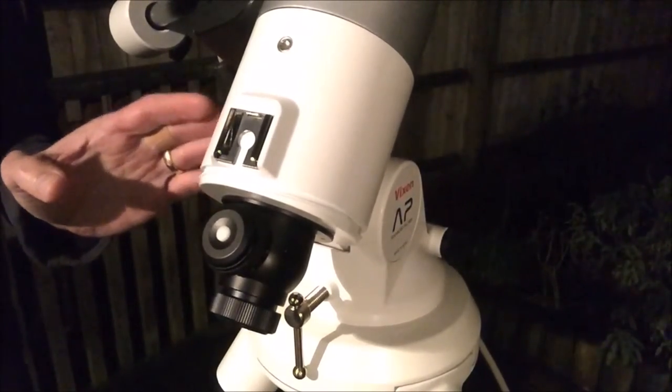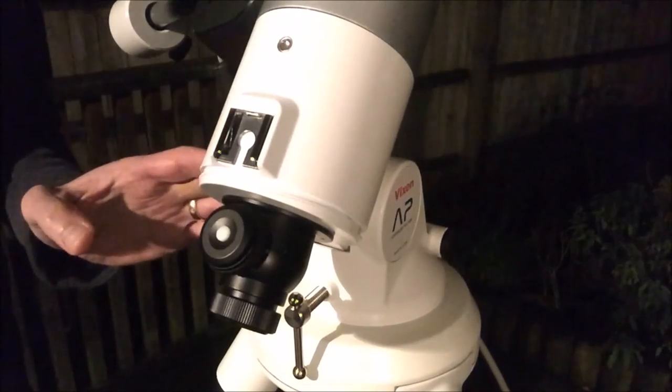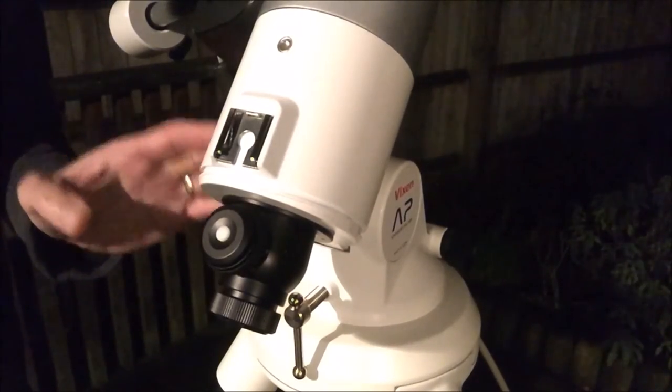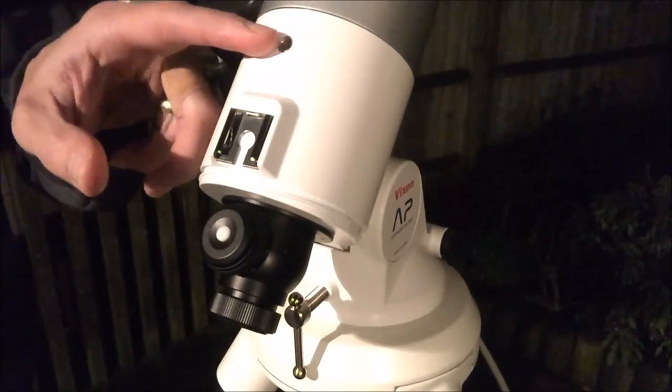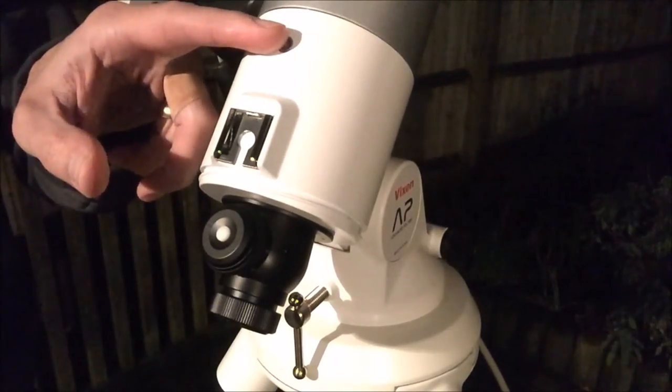During the observing session, it stays where you point it without the need for right ascension or declination clamps, and this works very well. You can also adjust the level of friction on each axis, for example here by adjusting a screw.